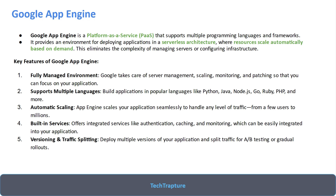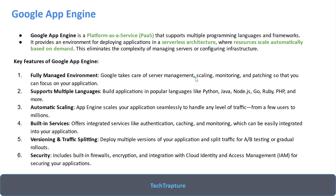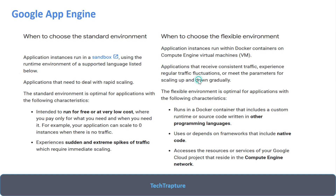Security features are also available in App Engine, including firewalls, encryption, and integration options. You can also deny traffic from specific IP addresses directly within Google App Engine.